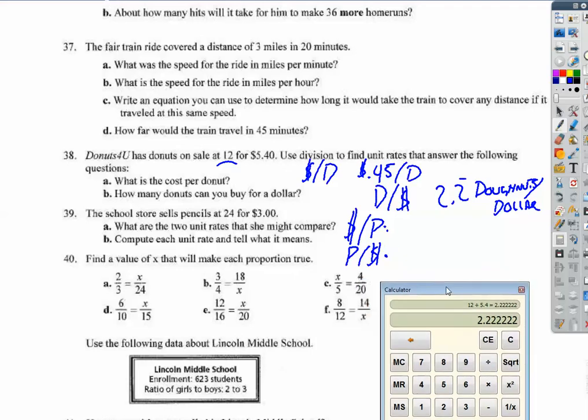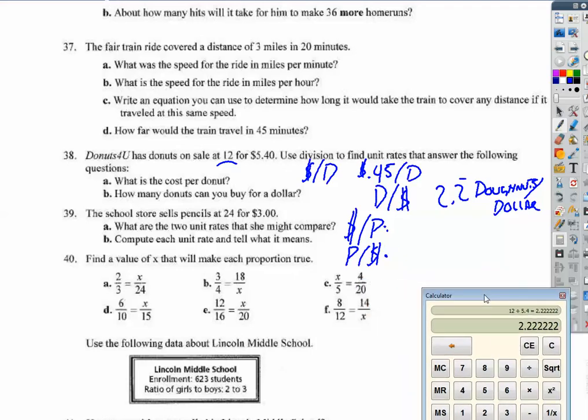Number 40. Number 40 is really just a bunch of cross multiplying or scale factoring. So, you know, what did you do to 5 to get 20? That doesn't help so much. What did you do to 20 to get 5? Well, you divide it by 4. So you divide that by 4 to get 1. What did you do to 3 to get 18? Multiply it by 6. So this is 24. For the ones that don't work that easily, you can reduce the fraction or use cross multiplication. Either way works.